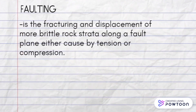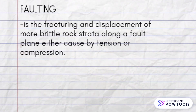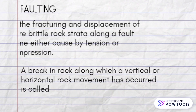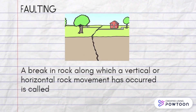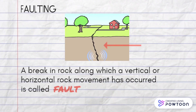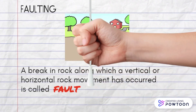Faulting is the fracturing and displacement of more brittle rock strata along a fault plane, either caused by tension or compression. A breaking rock along which a vertical or horizontal rock movement has occurred is called a fault.